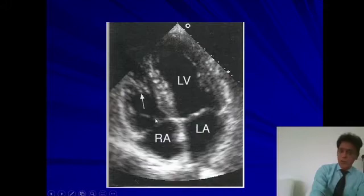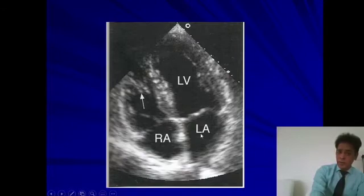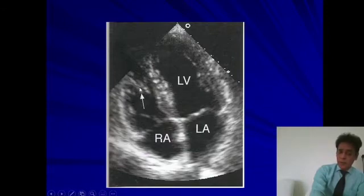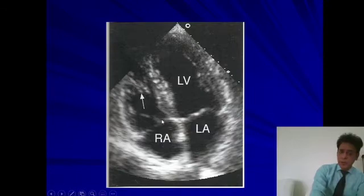The other thing we have to see is whether the two atria are connected to their respective ventricles. The right ventricle should be connected to the right atrium and the left ventricle to the left atrium. The right ventricle is smaller than the left ventricle, but more importantly the right ventricle has a moderator band close to the apex. Even more important is that the septal leaflet of the tricuspid valve is closer to the apex compared to the anterior leaflet of the mitral valve.